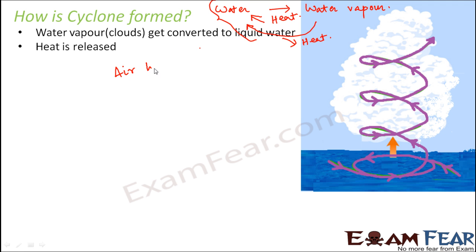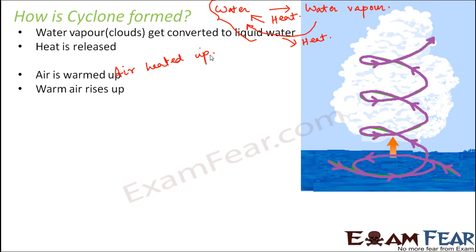When air gets heated up, it expands, becomes lighter, and the warm air starts rising up. As the warm air rises, there is movement of air — that is wind. The wind speed increases, and as a result pressure decreases. So as the warm air rises up, a low pressure area is formed.